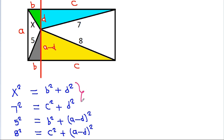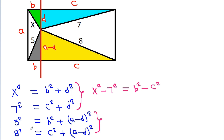And from these two equations, if we subtract both equations then we will get x² - 7² = B² - C², as the D² terms cancel. And from the other two equations, if we subtract both equations then we will get 5² - 8² = B² - C², as the (A-D)² terms cancel.